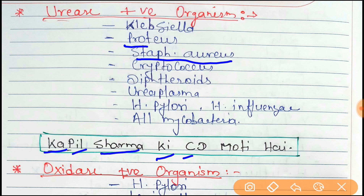Continuing with 'CD moti hai' — C for Cryptococcus, D for Diphtheroid. 'Moti hai' stands for Mycobacterium — all types of Mycobacterium.